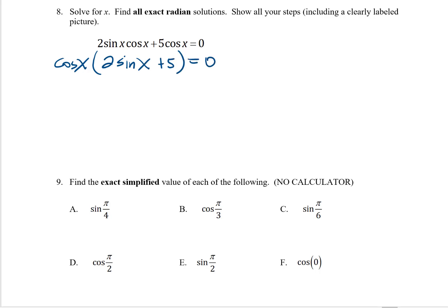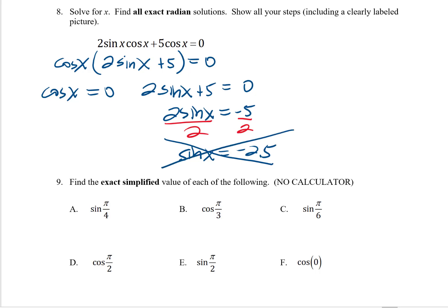I do have a 0 on the right side, that was important, because now I can set each of these equal to 0. I have cosine x equals 0, so I'll have to solve that. And then this other one, I'll move the 5 over to the other side, and then I'll divide by 2. This one comes out to be sine x equals negative 2.5, but that's impossible. The lowest sine ratio that you can have is negative 1, so I don't have to worry about this one. The only one that I have to worry about is cosine x equals 0.